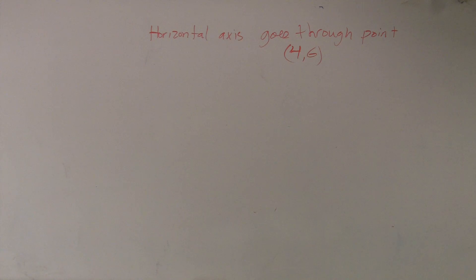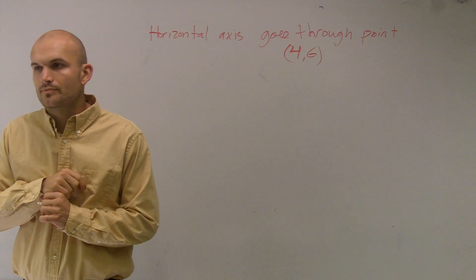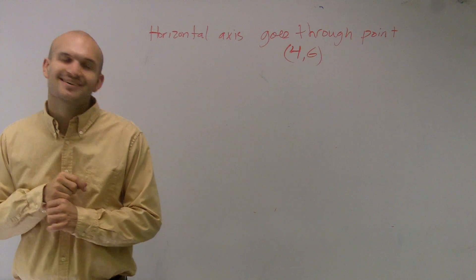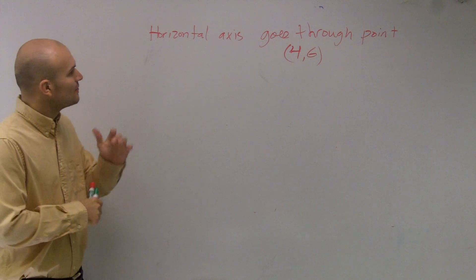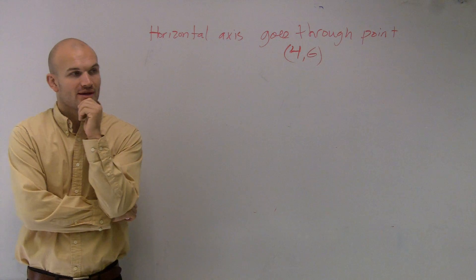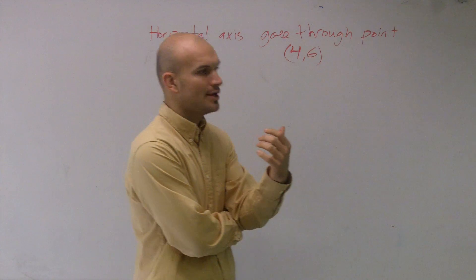Alright, so on this problem, what we need to do is write down the standard form. To write the standard form, it's going to go back through the exact same thing I've been going over and over again with you. We just need to determine, first of all, if we're talking about a vertical or if we're talking about a horizontal parabola—is it going to open up or down or left or right?